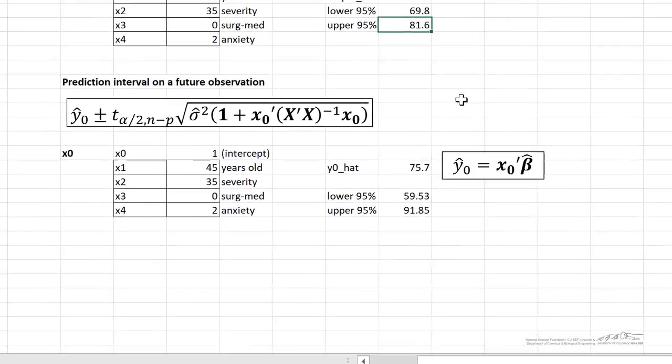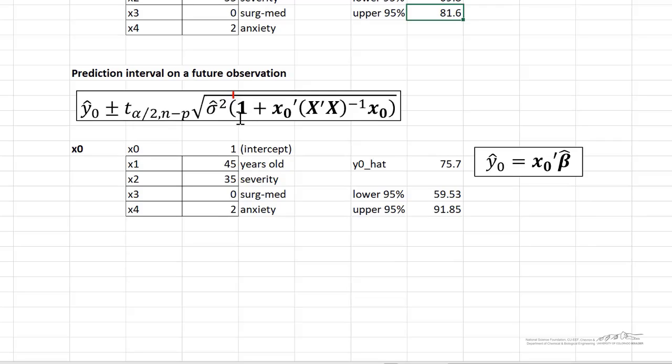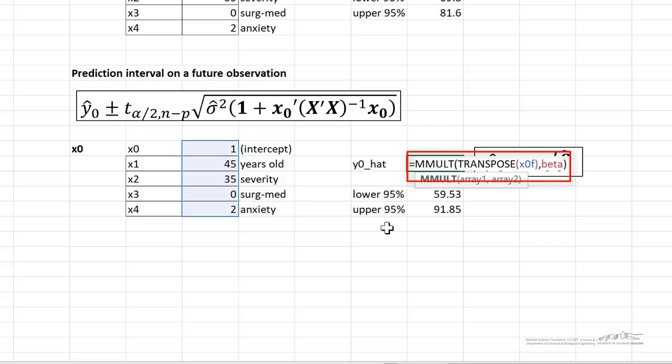Now the prediction interval is very similar to what I just went over. The only difference is now we have a 1 in here. So same thing here. If we want to predict given a future observation, we have our combination of inputs. Again, I have my intercept coefficient of 1. We can compute our y0 hat. So that would be the prediction by taking the transpose of x0 f, I call it here, multiplying by beta. So that would be 75.7.